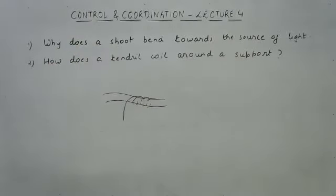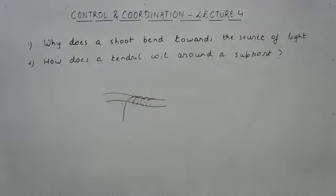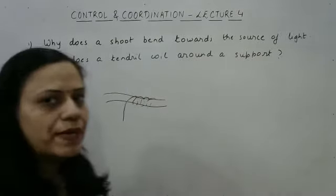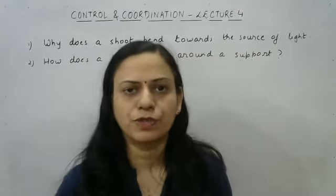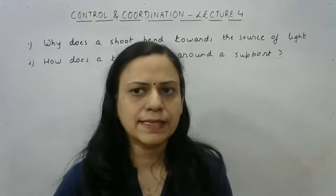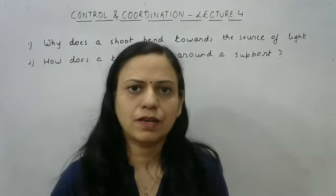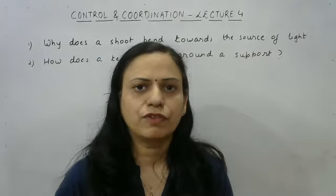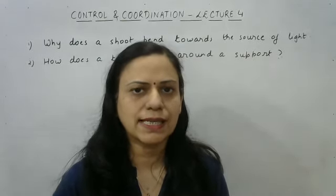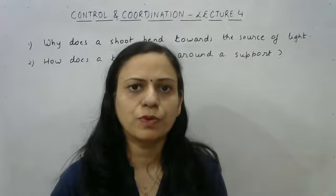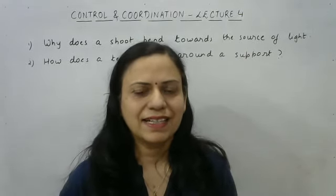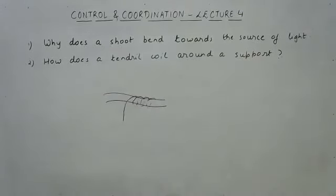Similarly, phototropism and auxins together help a shoot bend towards the source of light. So we have discussed how control and coordination takes place in plants — with the help of growth movements as well as plant hormones. Lecture 5 will be the concluding lecture for the chapter 'Control and Coordination', in which we will discuss the role of hormones in animals. Till then, don't forget to practice and study hard.